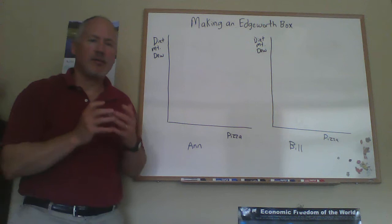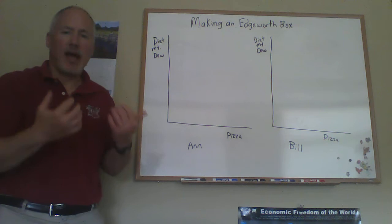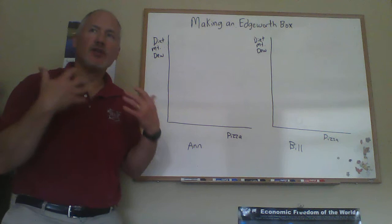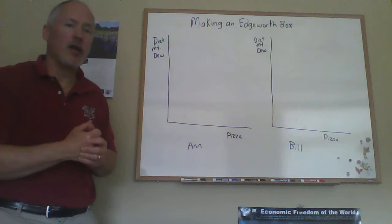The other thing we have in Chapter 10, which is a second general equilibrium model, is one of a pure exchange economy for which we use an Edgeworth box. The Edgeworth box is a really powerful way to visualize what's going on in an economy, especially in what's known as a pure exchange economy.